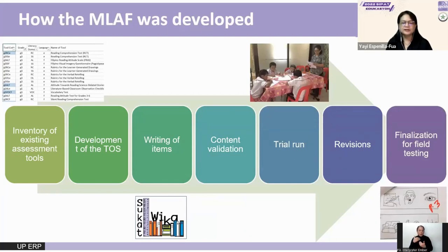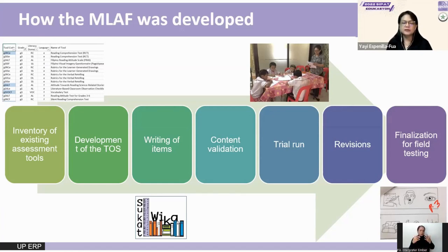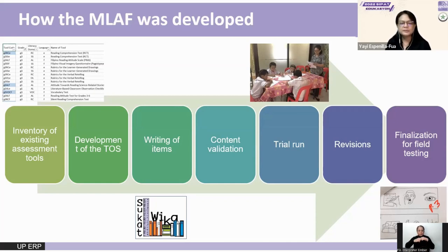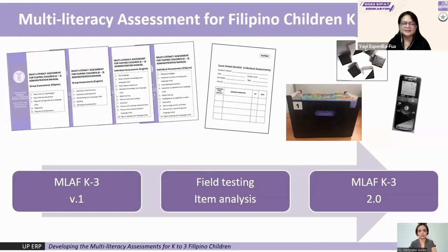Development of the MLAF went through the following process. We surveyed existing tools on the identified components — most sitting in libraries or repositories but validated and used for research. We sought permission from authors to use or adapt them. We constructed a table of specifications and created test items using Sukatwika to finalize word-level items. Sukatwika is a psycholinguistic analyzer developed by ERP in collaboration with the UP College of Engineering. Revisions were made based on content validation by experts and a trial run. It was then field tested before the pandemic, and the data gathered were used for item analysis employing item response and classical test theories as well as ANOVA, allowing decisions on which items to retain, revise, or discard.